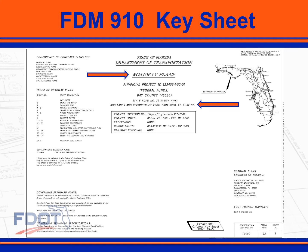Second, provide a description that includes the project type as shown in the current work program, such as resurface, add lanes and reconstruct, new bridge, etc. And include begin-end work limits using site features such as side roads, river crossing, or county line.